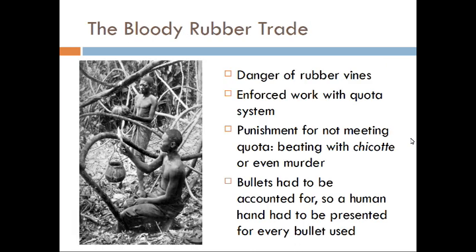Rubber vines were dangerous to harvest. Workers would slash and slice the vines to get the rubber out, letting it drip into a pot below. To extract it, they would cover their bodies with the rubber latex — slathering it all over in layers — and when the latex hardened they would scrape it off the skin with a blade, which would often take off the worker's hair with it. It was a very, very brutal system. The quota system was extremely brutal.